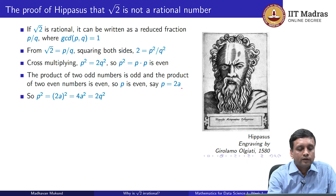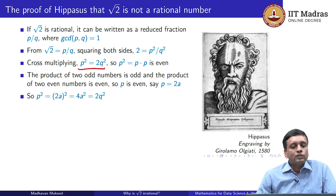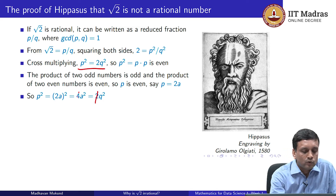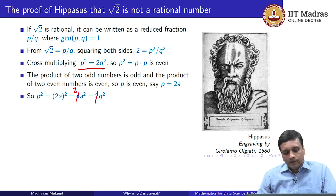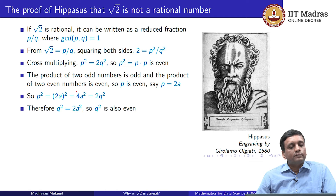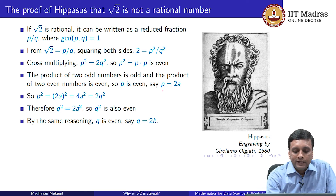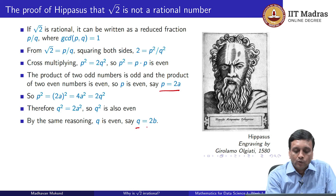Now let us substitute in this equation for p squared. p squared is 2a all squared, which equals 4a squared. So now 4a squared equals 2q squared. We can cancel the factor of 2 from both sides, giving us q squared equals 2a squared. And if q squared is 2a squared, then by the same argument as before, q squared is also even, and so q must be even. Therefore q can be written in the form 2 times some other number b.